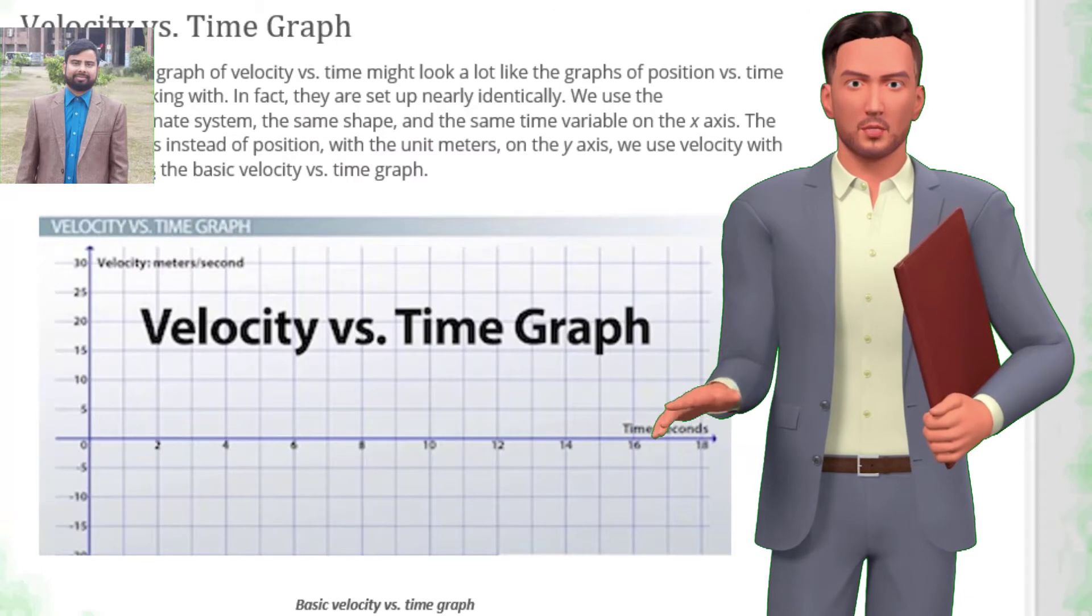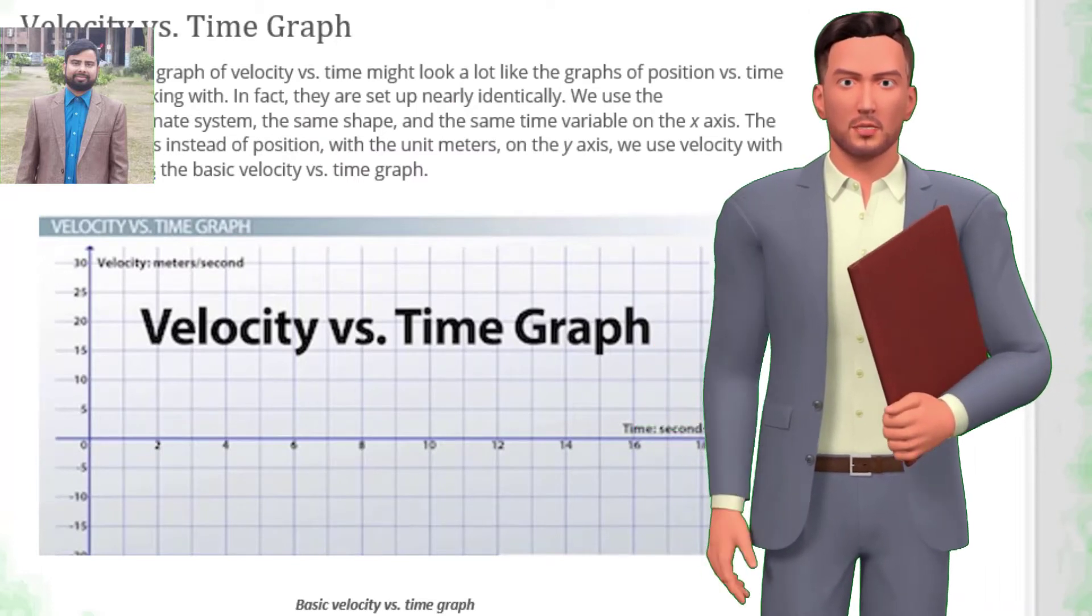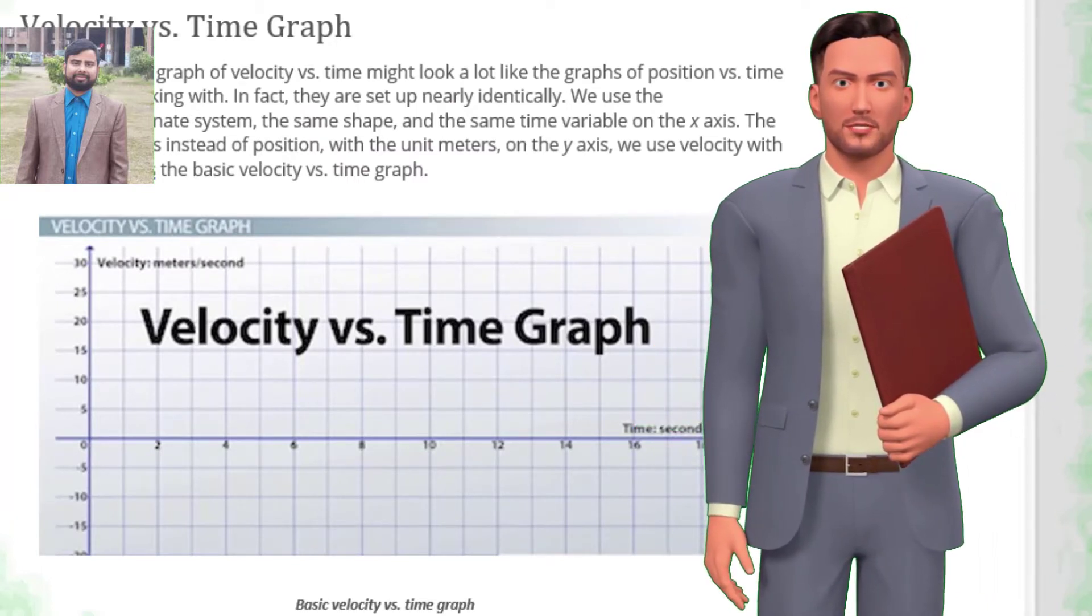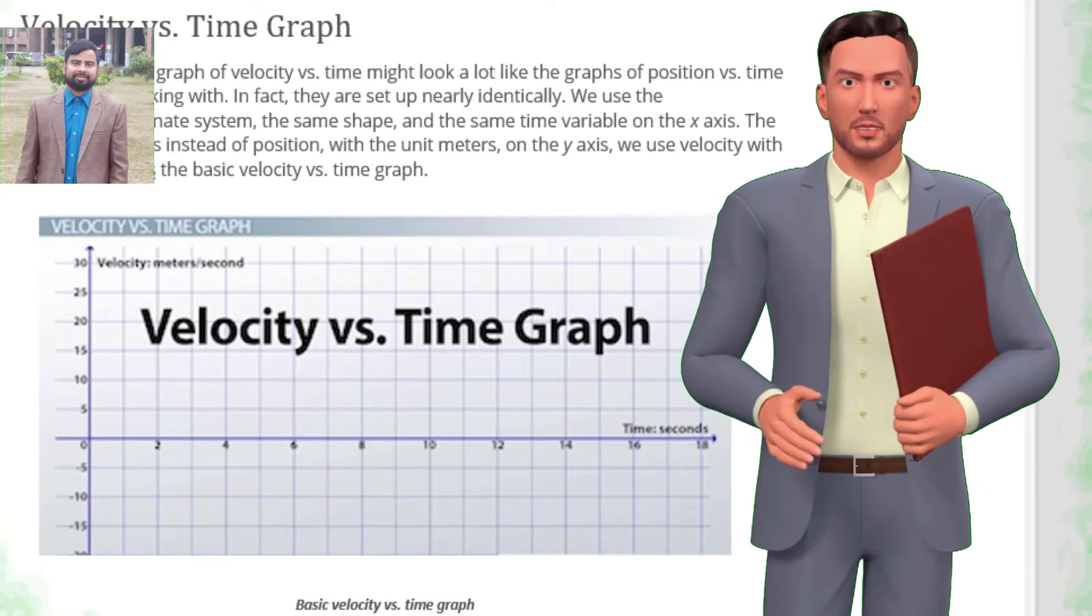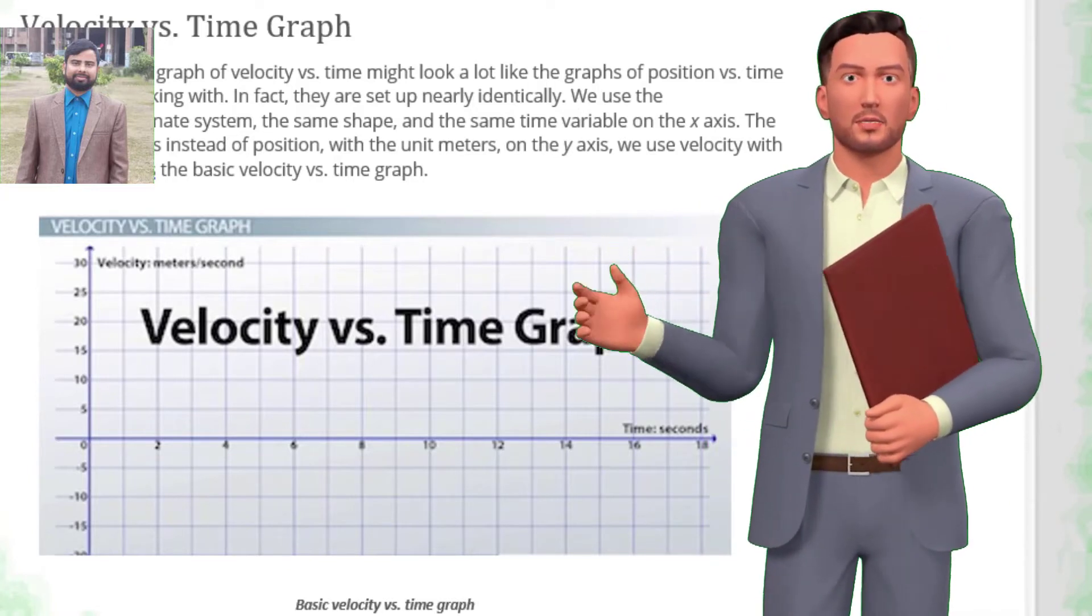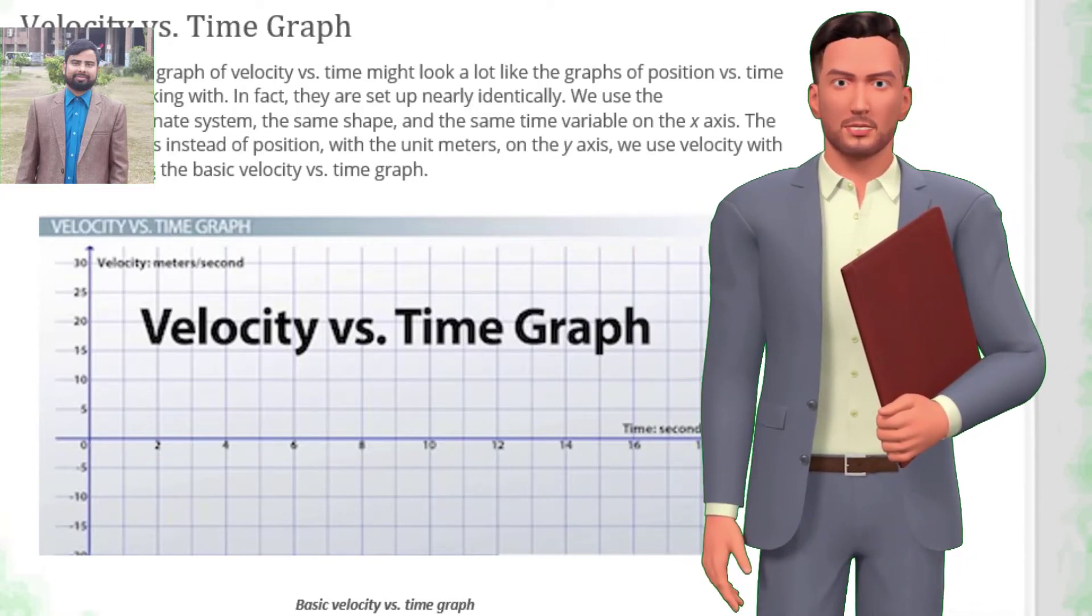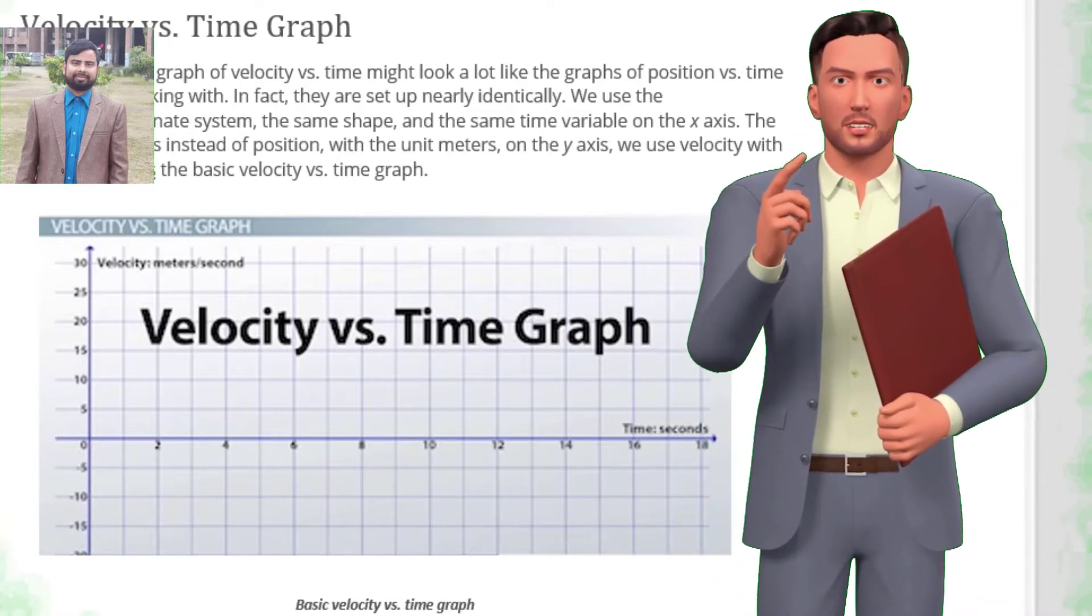Velocity versus time graph. At first glance, a graph of velocity versus time might look a lot like the graphs of position versus time we've been working with. In fact, they are set up nearly identically. We use the same x-y coordinate system, the same shape.